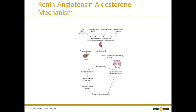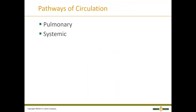The renin-angiotensin-aldosterone mechanism is located on page 345. I recommend that you review all of this thoroughly, as it is a large area. Also review the pathways of circulation: pulmonary and systemic.